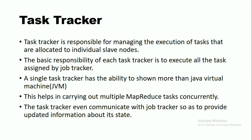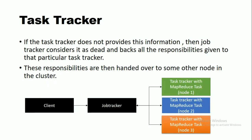The TaskTracker is responsible for managing the execution of tasks allocated to individual slave nodes. The basic responsibility of each TaskTracker is to execute all tasks assigned by the JobTracker. A single TaskTracker has the ability to spawn more than one Java Virtual Machine, which helps in carrying out multiple MapReduce tasks concurrently. The TaskTracker communicates with the JobTracker to provide updated information about its state. If the TaskTracker does not provide this information, the JobTracker considers it dead and reassigns all responsibilities given to that TaskTracker.